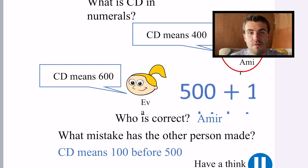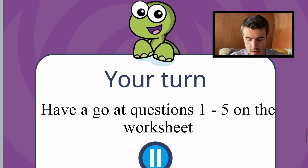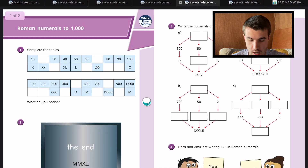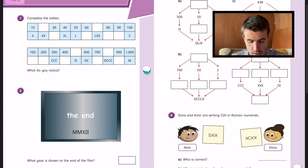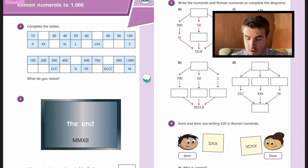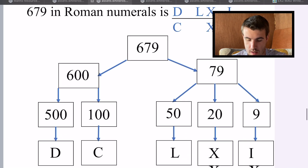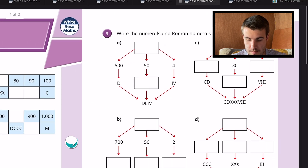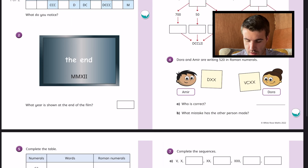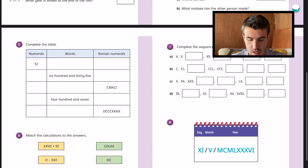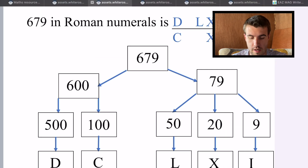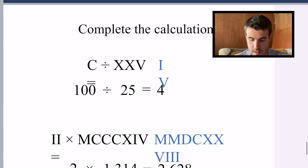That deeper reasoning thinking is why we're moving to White Rose. Then you're directed to do questions one to five on the worksheet. Flicking across to the worksheet: they're going to fill in a table with tens and hundreds, write the year shown at the end of a film in Roman numerals, complete diagrams using bar models, and answer questions about who's correct and what mistake they made — all linking back to the teaching slides. The lesson is broken into chunks, meaning you're not just sending kids off to work for the entire lesson — you say 'right, five questions, get sorted.'